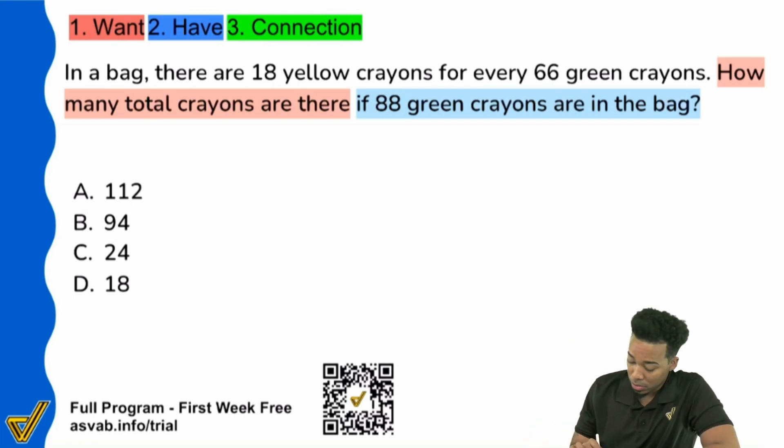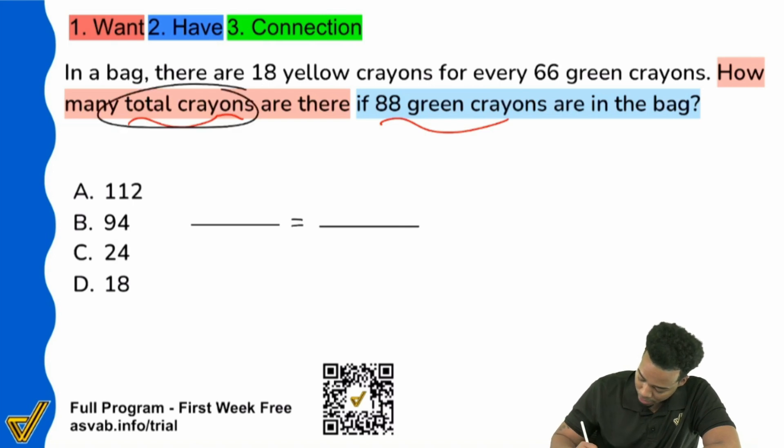So it says how many total crayons if we have 88 green. So right there from the very get go, I'm going to say, okay, we're looking for total crayons and we have 88 green. If you recall, remember that when it comes to proportions, you have this fraction equals this fraction. And what I see here is that I'm looking for the total. So I'll write total. And then we have 88 green on the bottom.